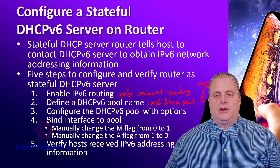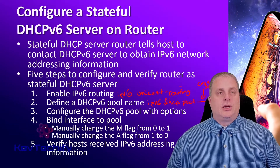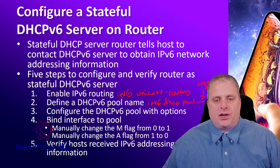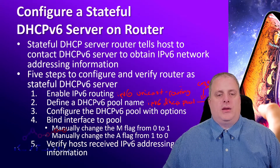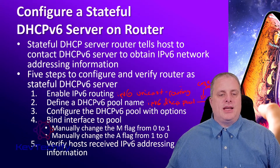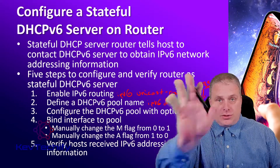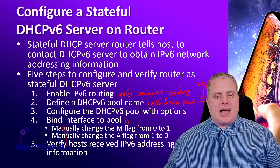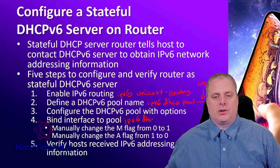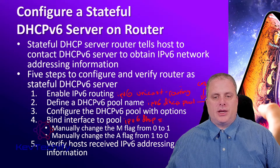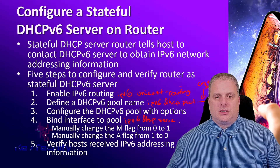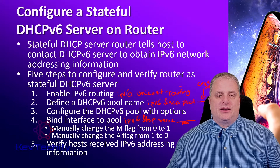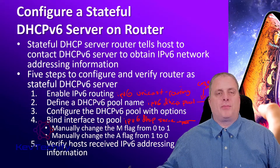Make sure you keep track of uppercase, lowercase, numbers, and dashes. Once we have that set up, we can configure any options for that pool — like the address prefix, DNS server, and domain name. Once you have all configurations done, we figure out what interface we're going to serve those addresses out of and bind it to the pool. The command is IPv6 DHCP server and then the pool name. You are in that interface, and this command binds that pool to that interface.